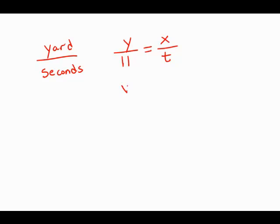Cross multiply, we get y times t equals 11x. And then to isolate t, we're going to divide by y. So t equals 11x divided by y. And that is answer choice A.